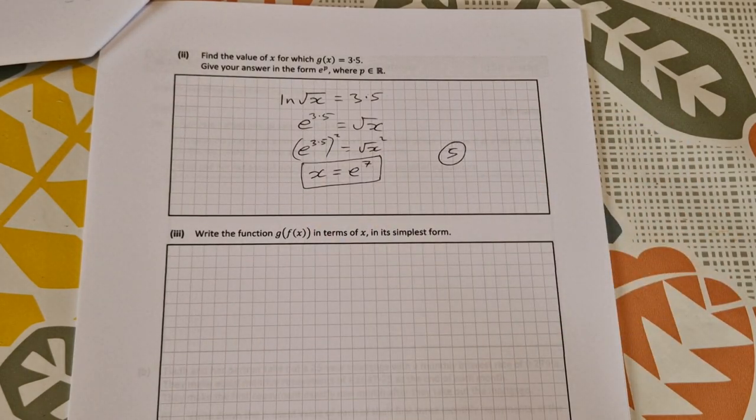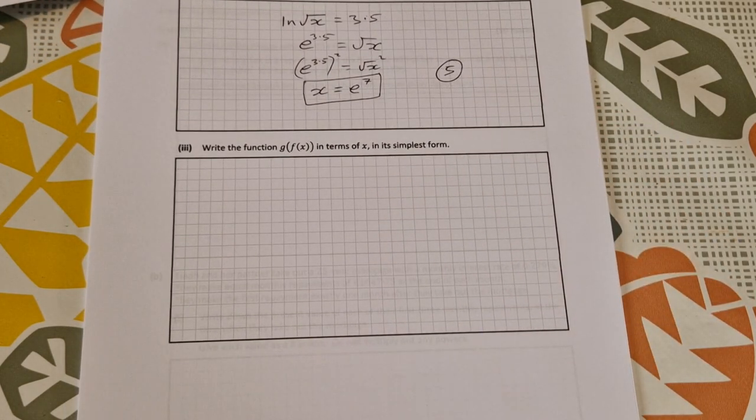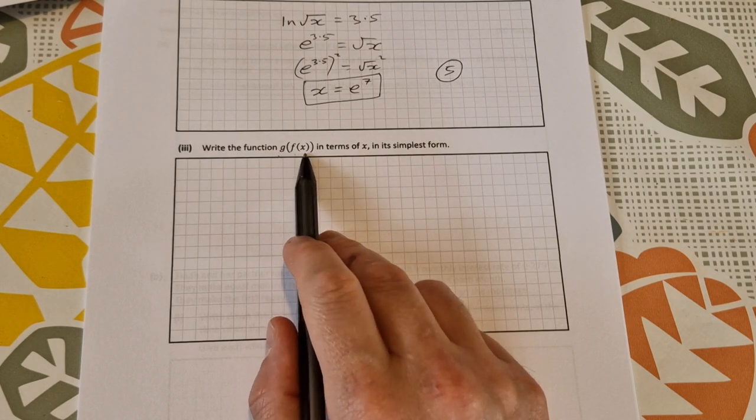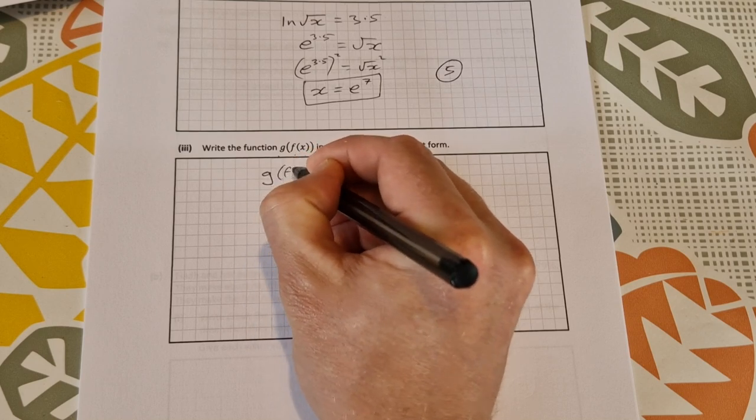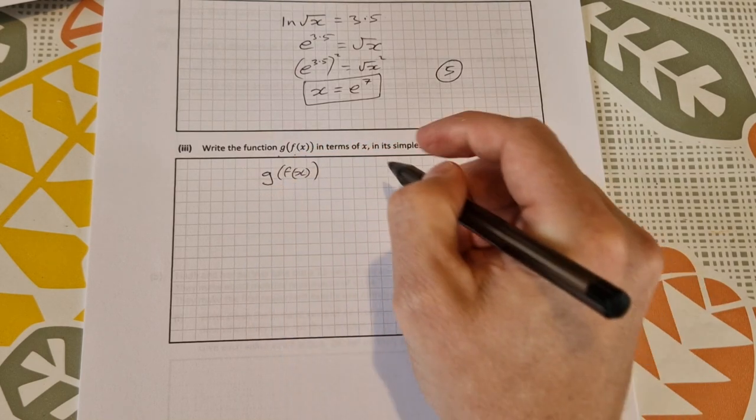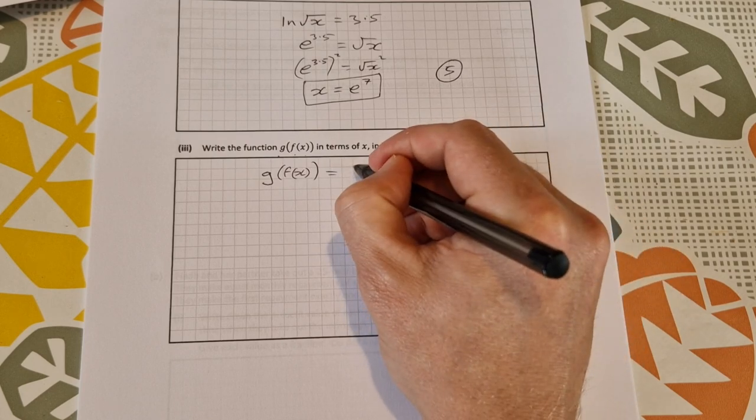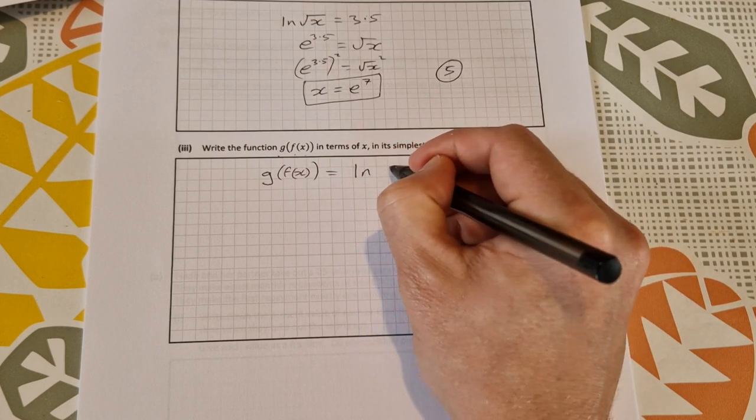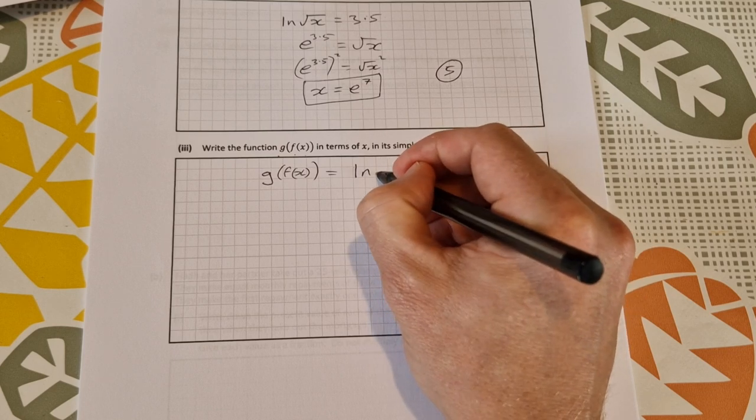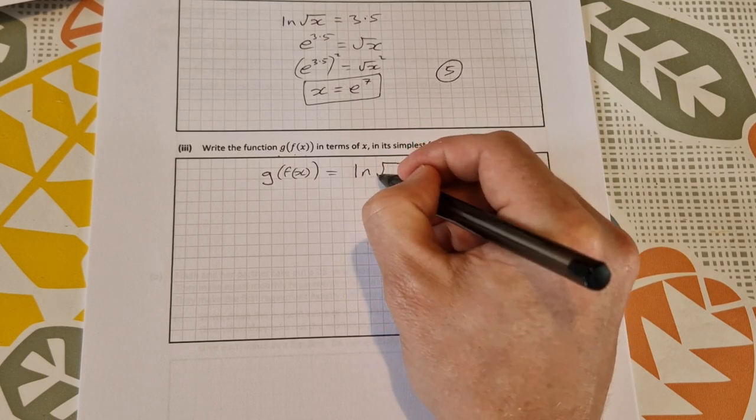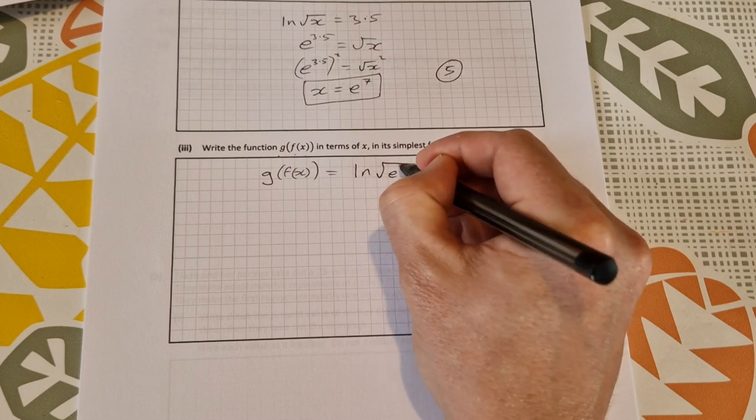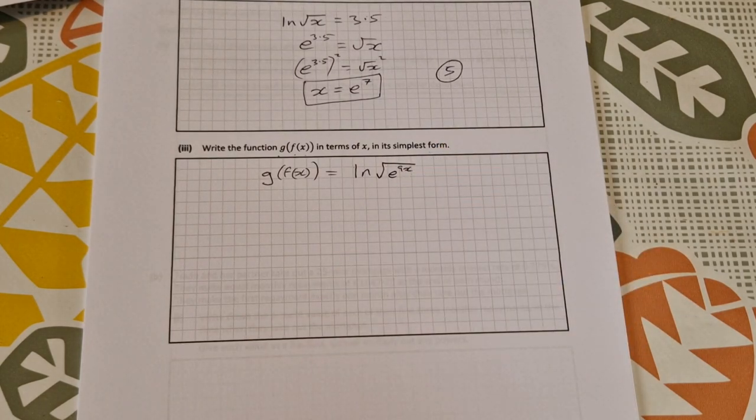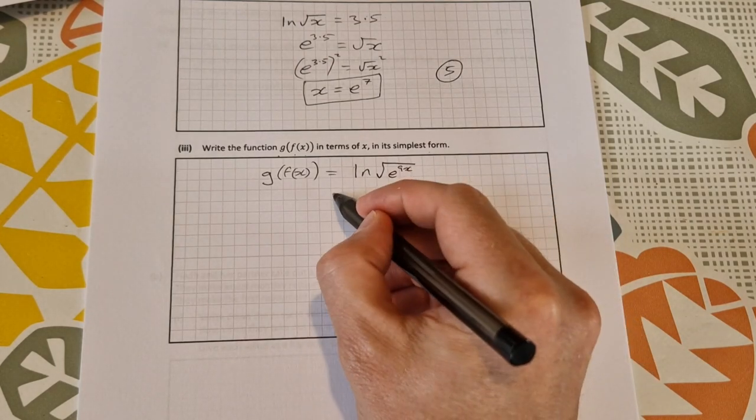And then finally part 3: write the function g(f(x)) in terms of x in its simplest form. So g(f(x))—you start off by doing g(x), which is ln(√...), and now we do f(x) inside here. f(x) was e^(9x), so that's g(f(x)). To write it in its simplest form, we go ahead and see what we can do.